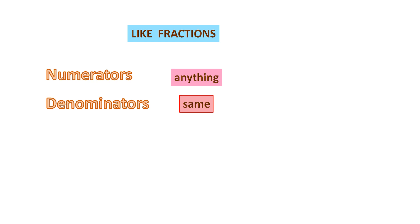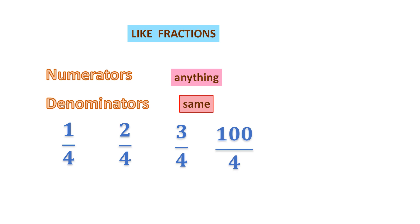Let us take some fractions: 1 by 4, 2 by 4, 3 by 4, 100 by 4, 57 by 4. What can you observe? In all these, the denominators are 4. The bottom part is all 4, but the numerators are anything — 1, 2, 3, 100, 57 — you can have anything, but the denominators have to be the same.